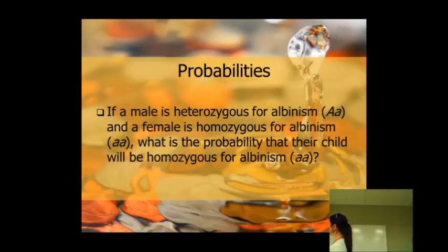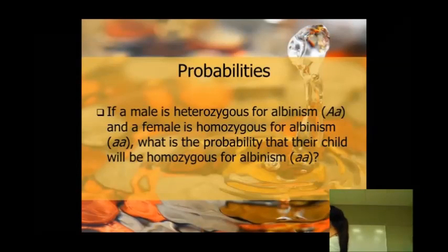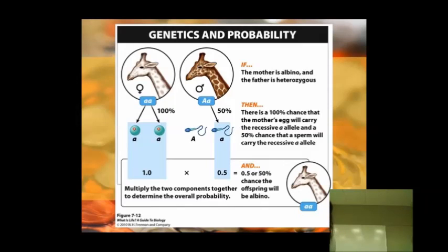What is the probability that their child will be homozygous for albinism, little a, little a? I believe that it is a 50% chance. Yes, 50% chance.